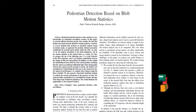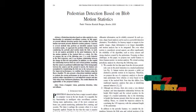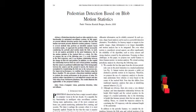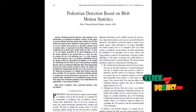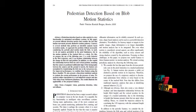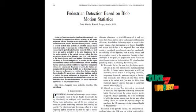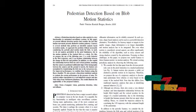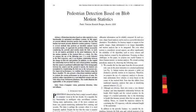In the background subtraction process, background subtraction is a widely used approach for detecting moving objects in a video from static cameras. In this method, the image foreground is extracted for further processing. Here, we are using the frame differencing method in order to extract the foreground object. The difference between the image and the empty background image gives the foreground objects.